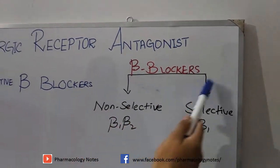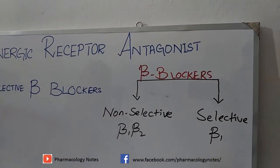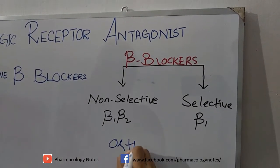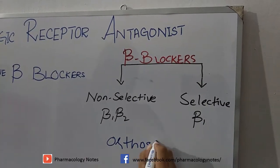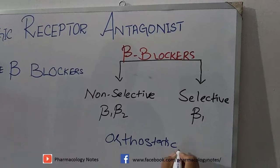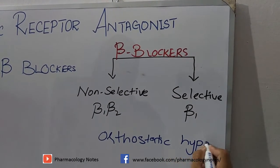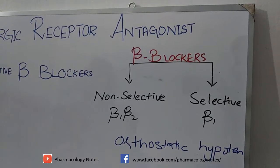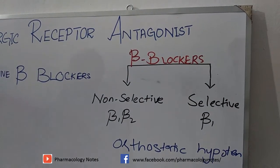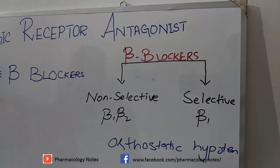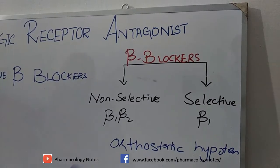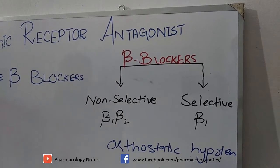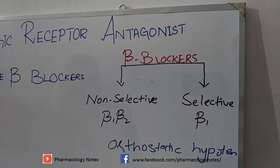Beta blockers decrease blood pressure but do not cause orthostatic hypotension, because alpha-1 receptors remain functional — only the beta receptors are blocked. These beta blockers are used in cases of arrhythmia, congestive heart failure, and glaucoma.